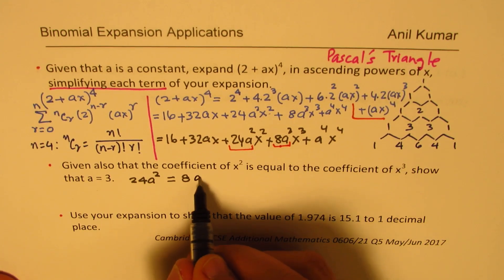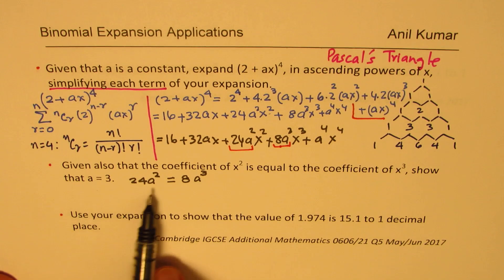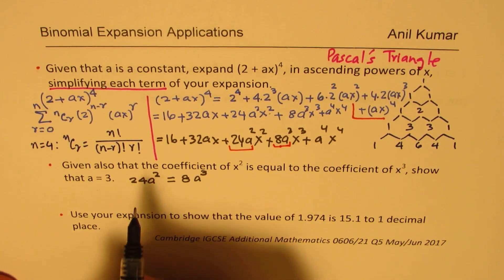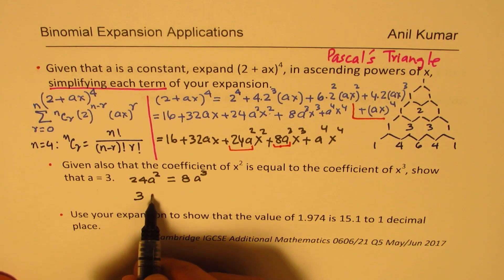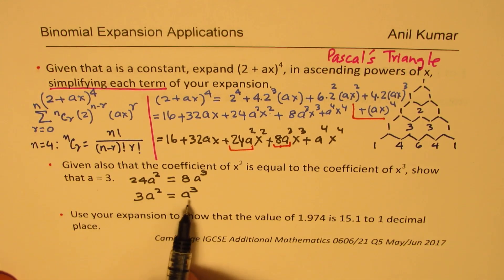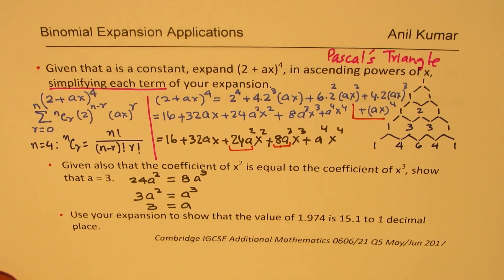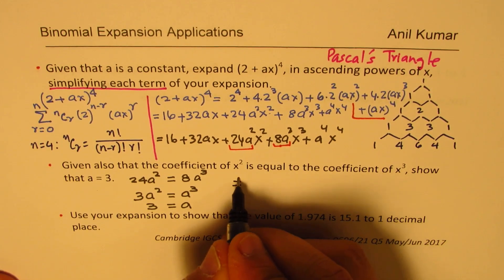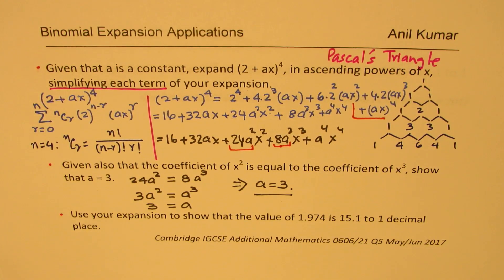Dividing both sides by 8: 3a² = a³. Then dividing both sides by a²: 3 = a. So a equals 3. By comparing these coefficients, we have shown that a = 3.